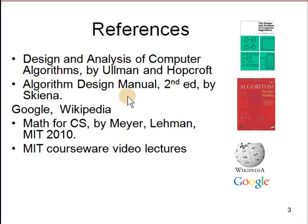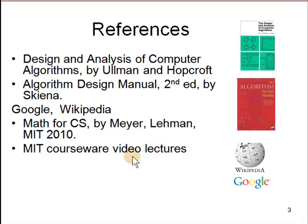A lot of data is found by searching on Google and Wikipedia. The math book you should be referring to is Math for Computer Science by Mayer and Lehman — it's a free MIT book. There are also a lot of MIT course lectures on YouTube you may look at in your free time.